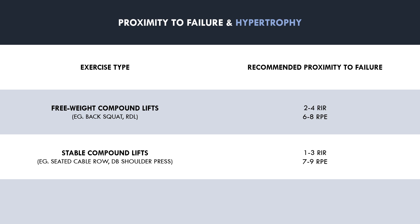Isolation lifts are generally most suitable to train closest to failure, because they induce very little central fatigue, meaning the target muscle is really the only tissue being stressed. Regardless of how close to failure we train, the target muscle will always be the limiting factor, assuming technique is strict. This includes exercises like bicep curls and calf raise variations. An appropriate proximity to failure for these exercises would be around 0-2 reps in reserve, or RPE 8-10.